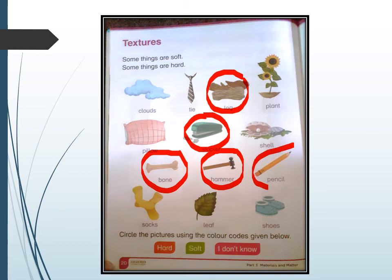Which objects are left? Cloud, tie, plant, pillow, shell, socks, leaf, and shoes. There is one more hard object—that is shell. So here I have done a circle with the red color.